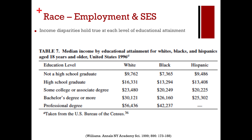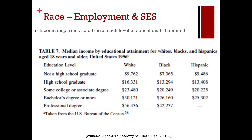These income disparities hold true at each level of educational attainment. Without a high school diploma, there's a difference of about $2,000 — significant in terms of day-to-day life. But that gap doesn't go away when you get a high school degree, an associate's, a bachelor's, or even a professional degree. As a matter of fact, as you go up in educational attainment, the gap between Black and white median income actually goes up.